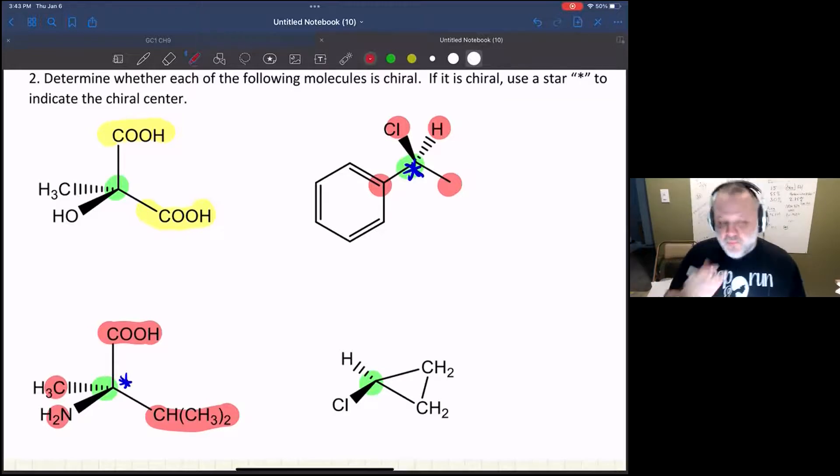Now we have a carbon that's attached to a three-membered ring. In order for a carbon in a ring to be chiral, it has to be different around the ring. The direction you go around the ring has to be different from the other direction around the ring.